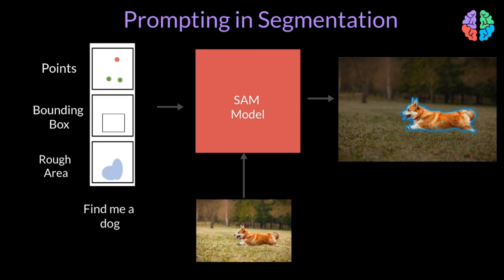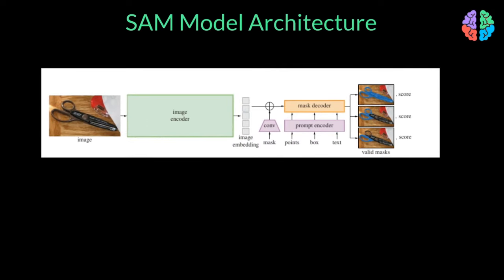Last but not least, it could literally be a text prompt explaining what to segment in the image. In any case, the model should be flexible enough to handle any of these inputs and output segmentation masks. For this reason, the model architecture has an image encoder which encodes the input image into a standard representation called embeddings. These days there are several neural networks available for embeddings.